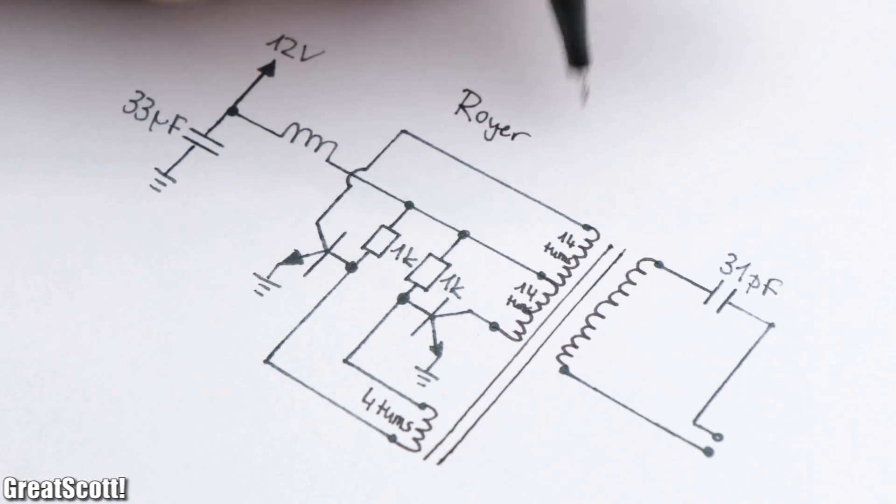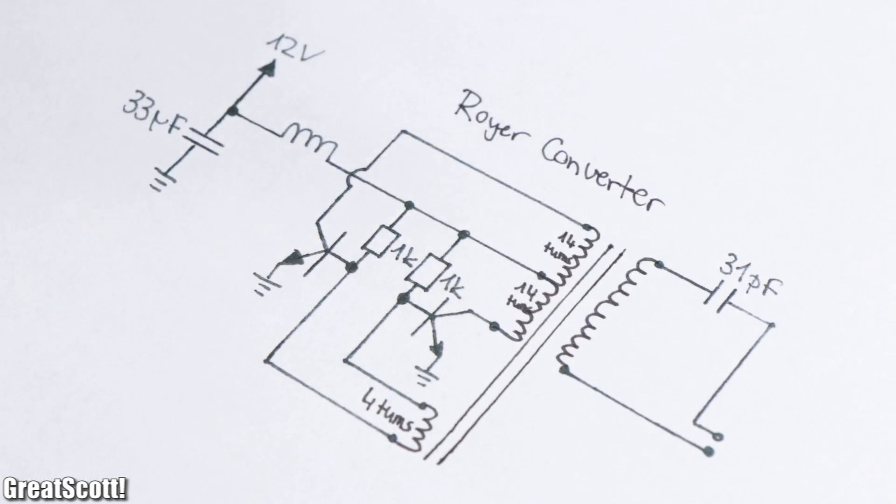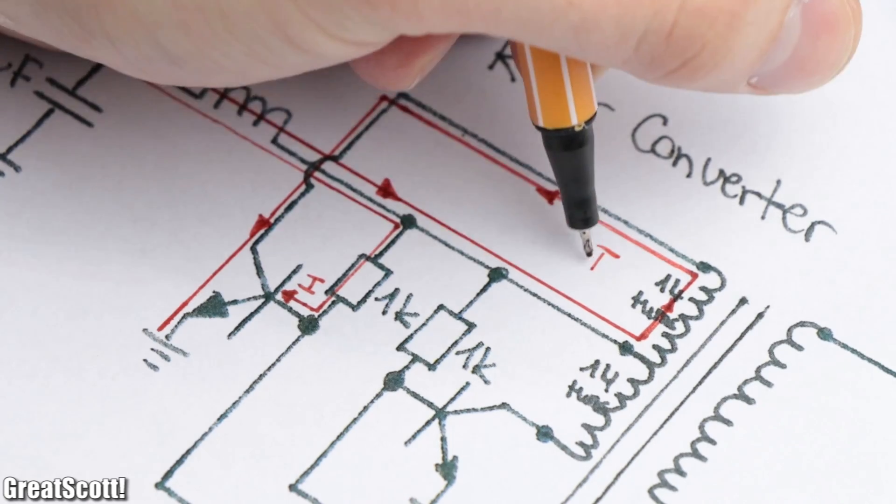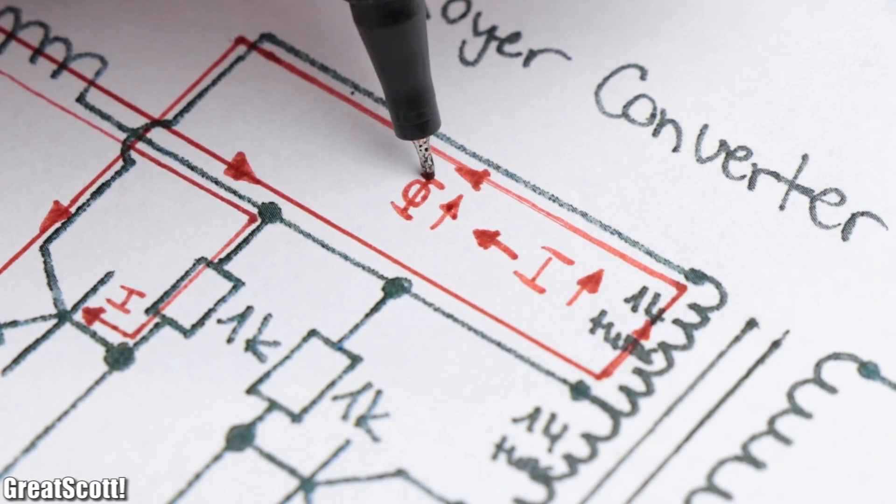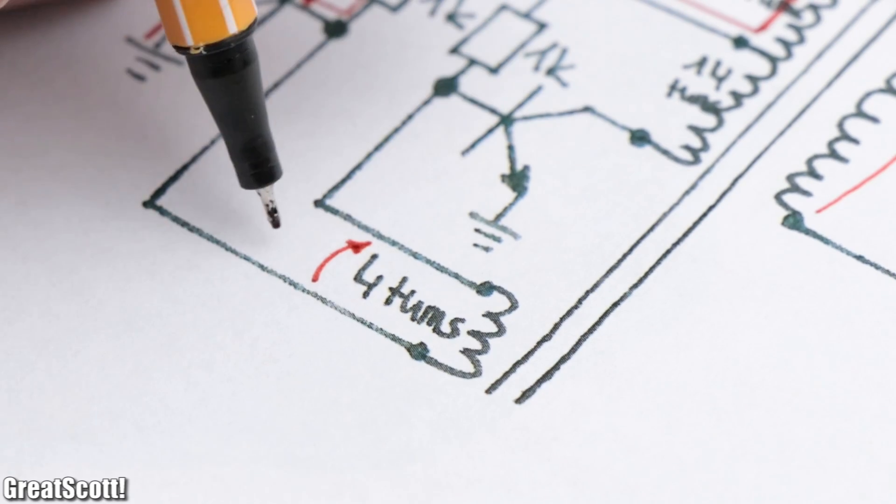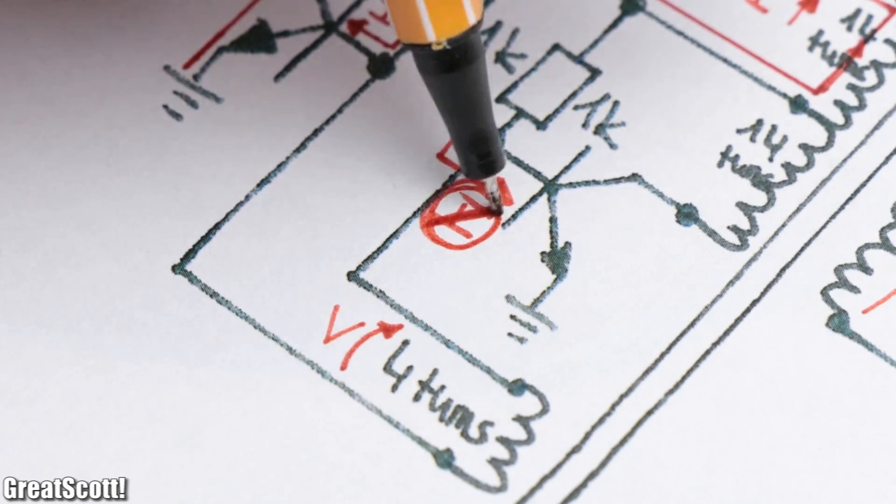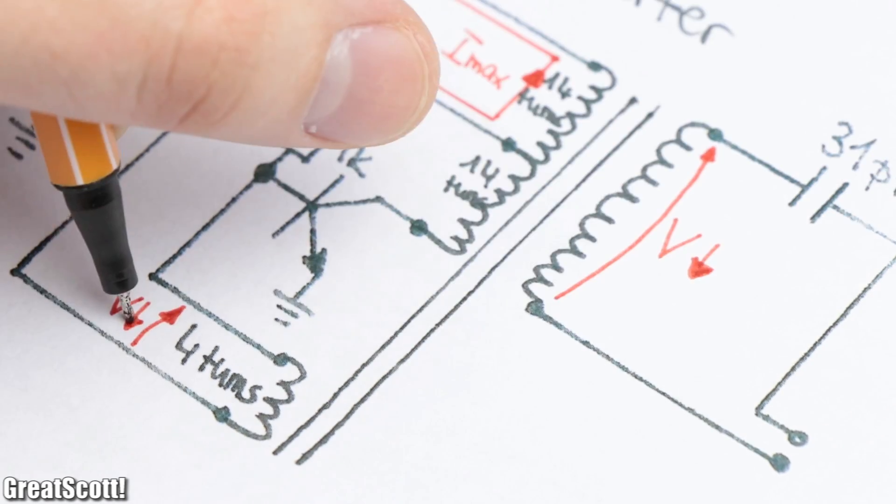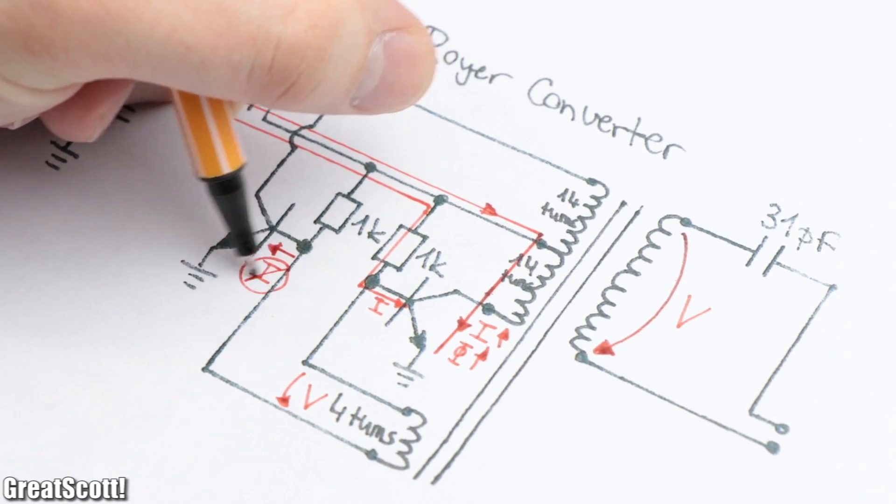And now that we successfully identified the circuit as a so-called Royal Converter, how does it actually work? Well, let's say transistor 1 conducts first, which means that the current through one half of the primary coil will increase. This creates an increasing magnetic flux which thus induces a voltage into the secondary and also in the feedback coil, which therefore hinders the second transistor to become conductive. Once the current maximum is reached, the induced voltages become lower, and thus the second transistor turns on and repeats the same procedure just in reverse.